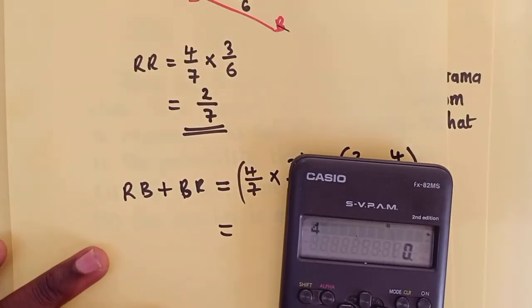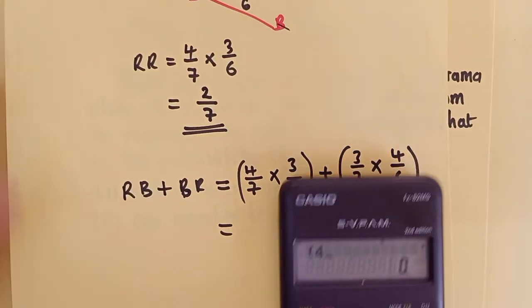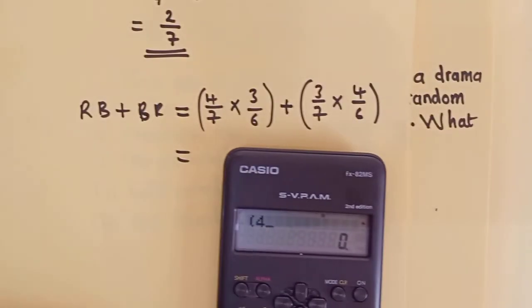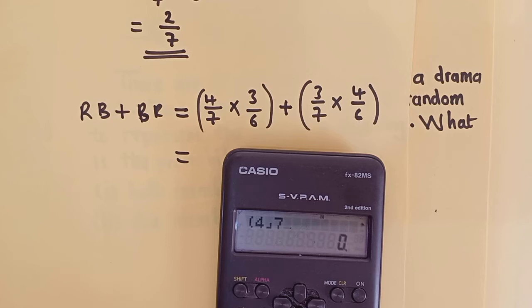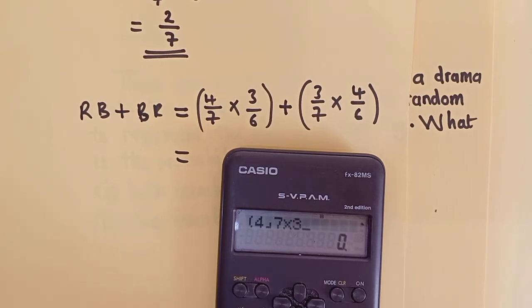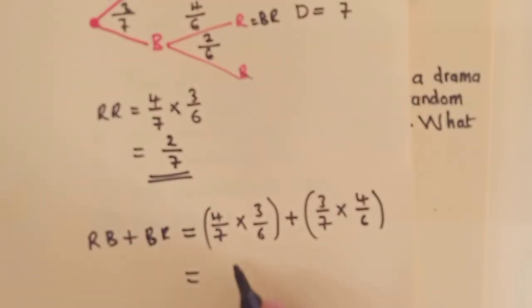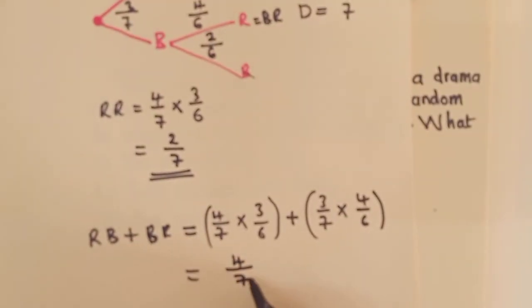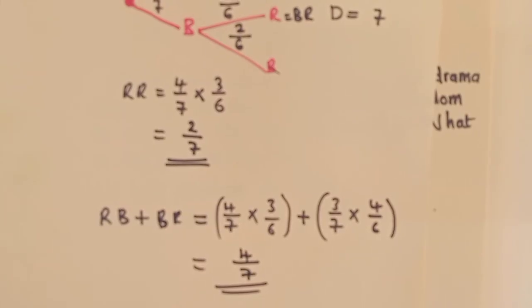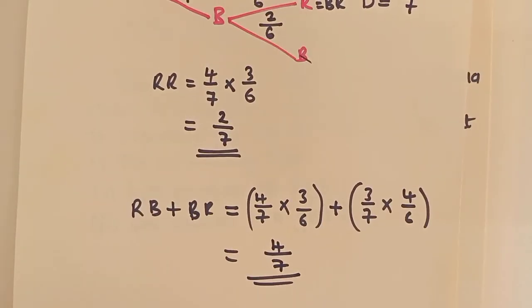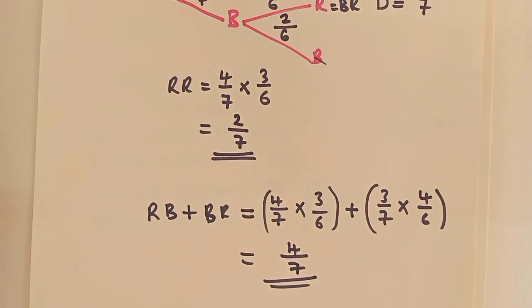Just do the same on your calculator. You can even start with the brackets. Four. I want to calculate this. It is four over seven times three over six. Close. Plus. Open bracket. Three over seven times four over six. Like that. It will be four over seven. So our answer here will be four over seven. So this is the answer that we will get. Hopefully you have gotten that idea.